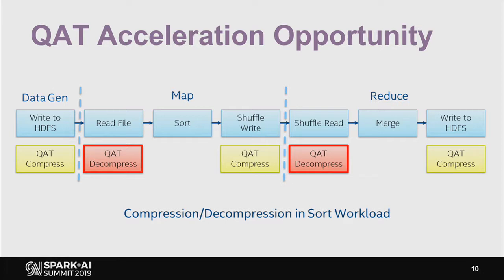To put it all together, we can use QAT to accelerate the following phases in the data pipeline. We can use QAT to accelerate compression during HDFS write. In the map stage, we can use QAT to accelerate decompression when reading data from HDFS and compression during shuffle write. In the reduce stage, we can use QAT to accelerate decompression during shuffle read and compression when writing output to HDFS.